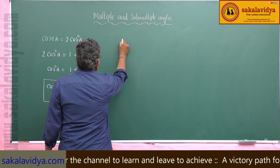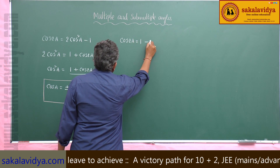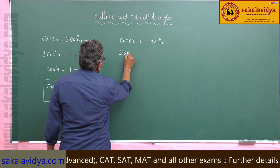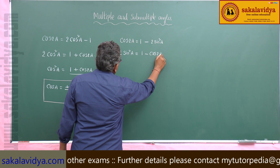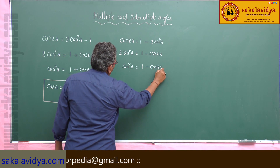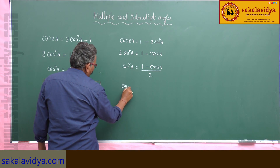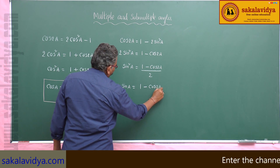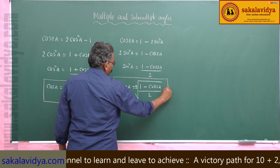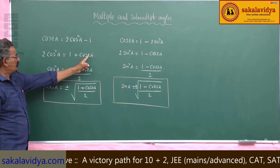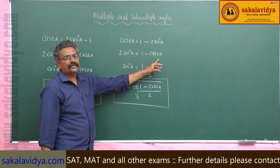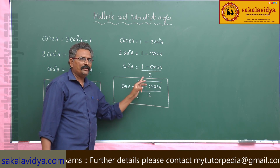Similarly, we know cos 2a also equals 1 minus 2sin²a. Rearranging, 2sin²a equals 1 minus cos 2a, so sin²a equals (1 minus cos 2a) / 2. Therefore, sin a equals plus or minus the square root of (1 minus cos 2a) / 2.